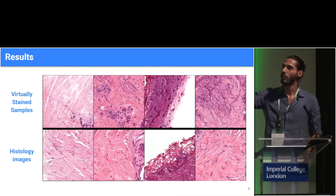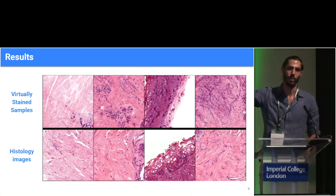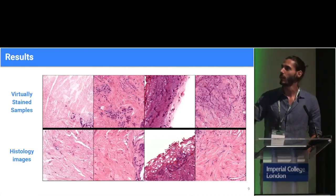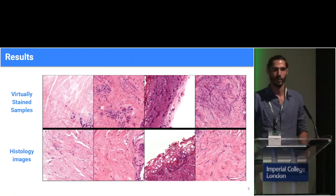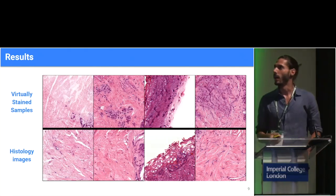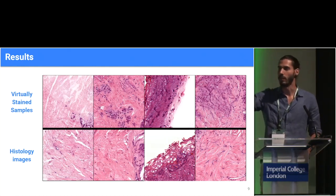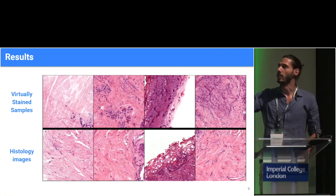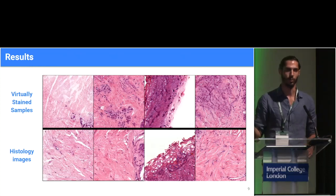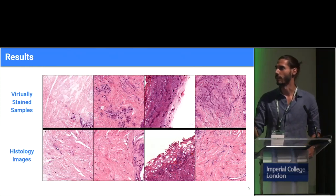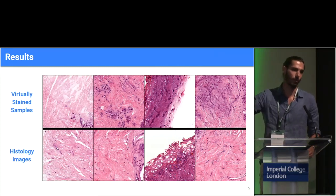These are some qualitative results. The first row shows confocal microscopy images generated using the architecture I just described, and the bottom row shows real samples from the histology domain. Our pathologists have already started working with these samples and are saying they can identify structures in the transformed confocal microscopy samples that they can potentially use to perform diagnosis. Since GANs are prone to hallucinate and produce artifacts, we are performing a diagnostic evaluation of this method before having it deployed to clinical practice.